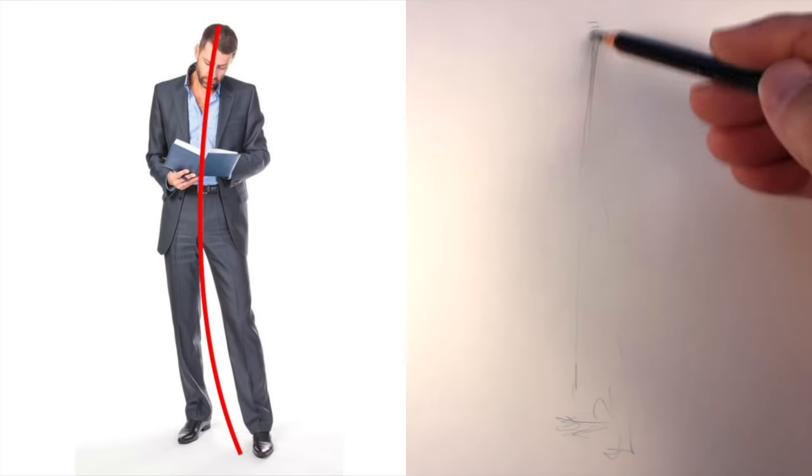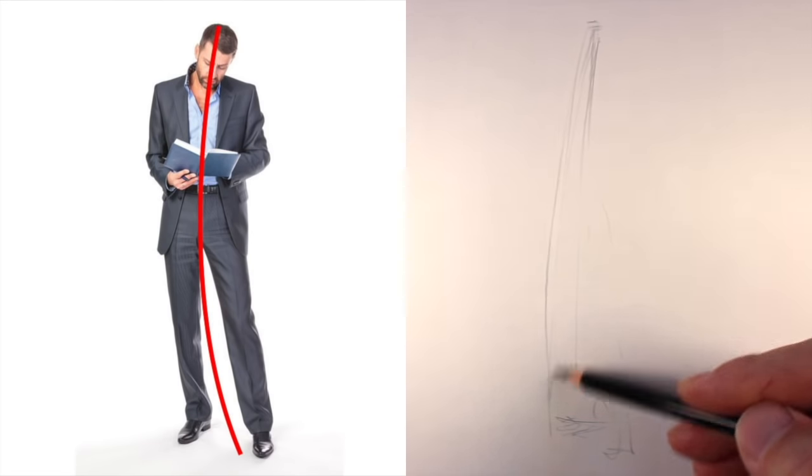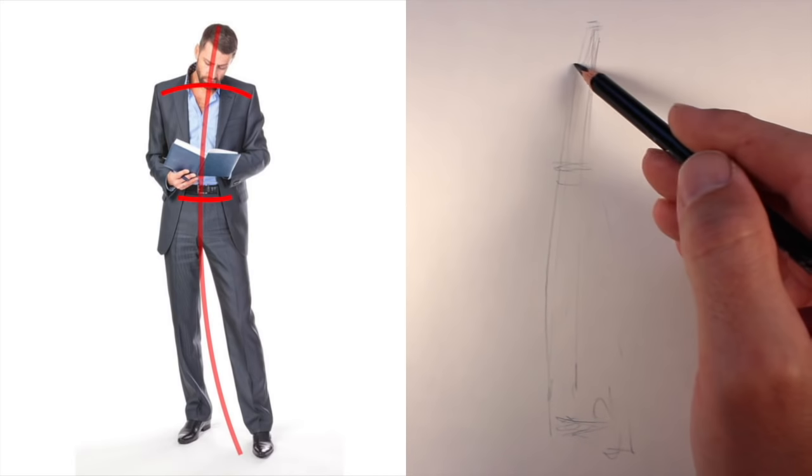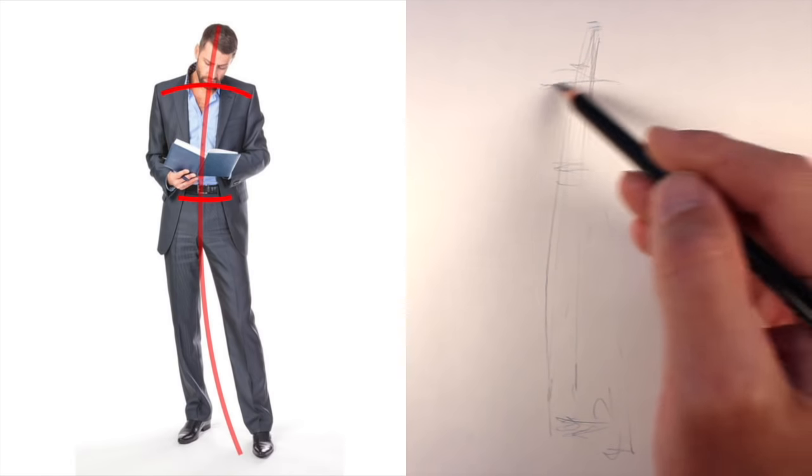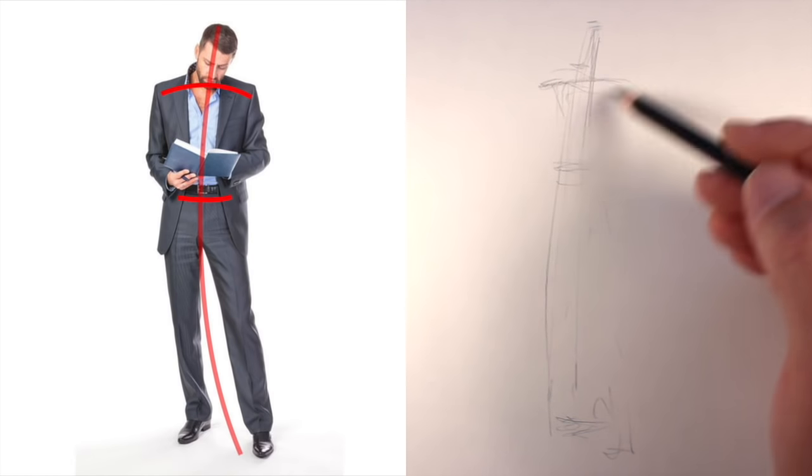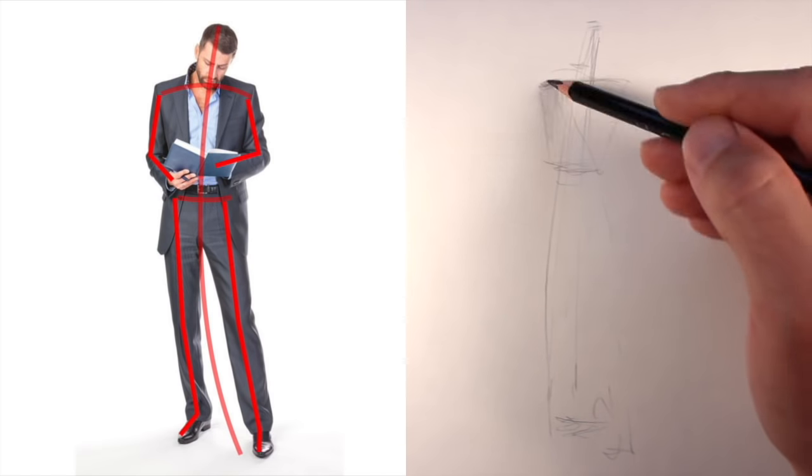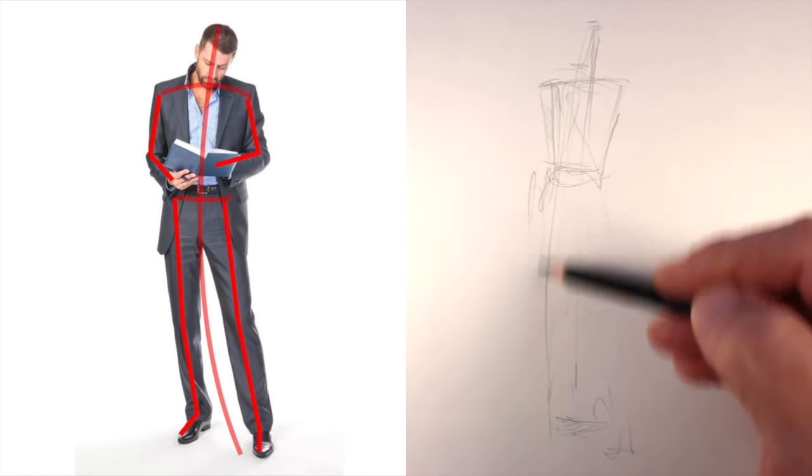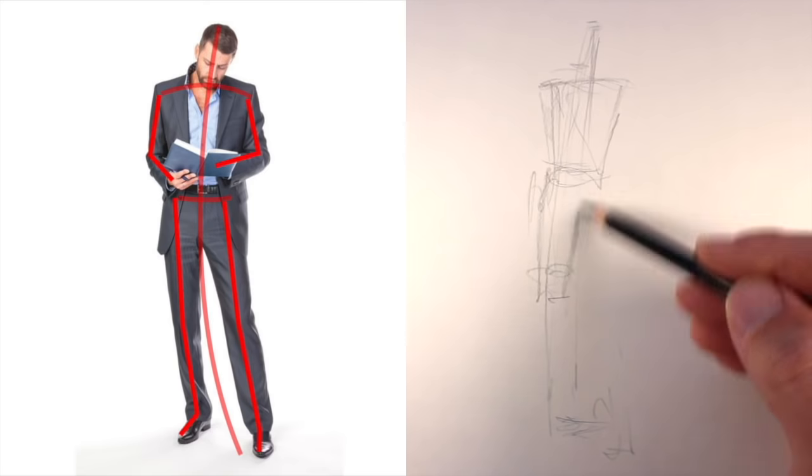For myself, I like to start with a line from the top of the head to the bottom of the feet. From here, I like to define a line for the shoulders and the waist. Once these important elements are in place, I can use them for comparison purposes to draw in the arms and the legs and the rest of the parts of the body.